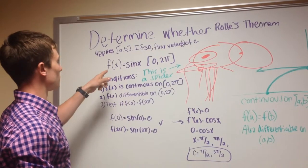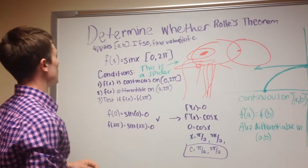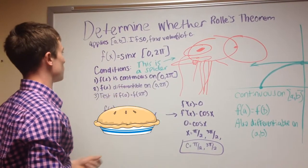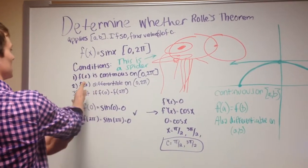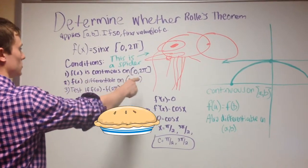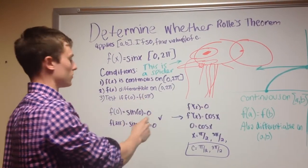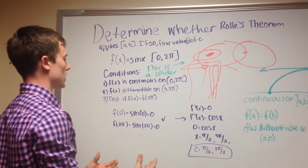Anyways, so for this problem, we're looking for the value, possibly values, of c. We have the equation f of x equals sin x on the closed interval zero to two pi. So, what we're going to do, well, we have these conditions. f of x is continuous on zero to two pi. f of x is differentiable on zero to two pi. That's an open interval, though.